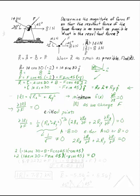Punching in all the known numbers, this simplifies to F = 2.03 kilonewtons. Always remember to go back and check if you've answered the question — we found the magnitude of F such that the resultant is as small as possible, but we still need the resultant force itself. Plugging this value of F back in gives a magnitude of R of 7.87 kilonewtons. In Cartesian form, R equals −5.56i + 5.56j.